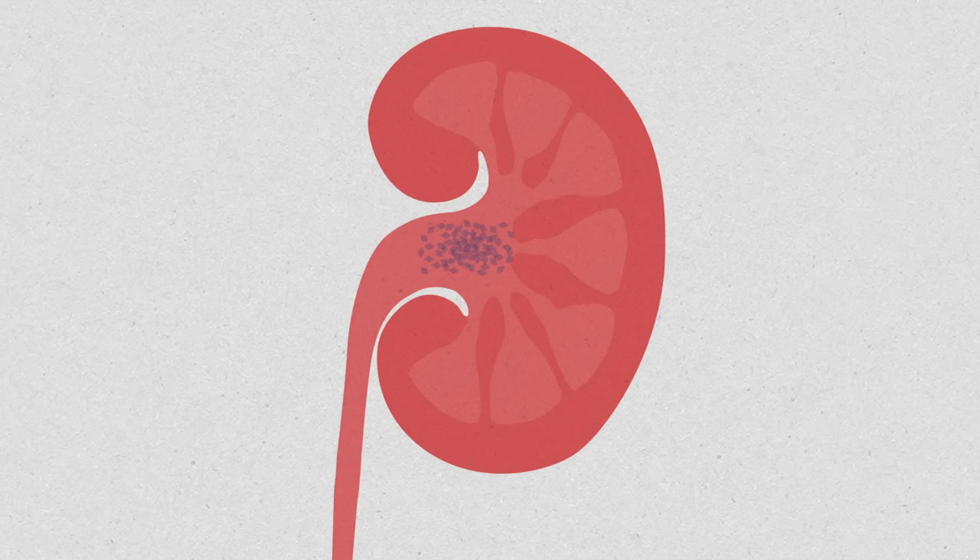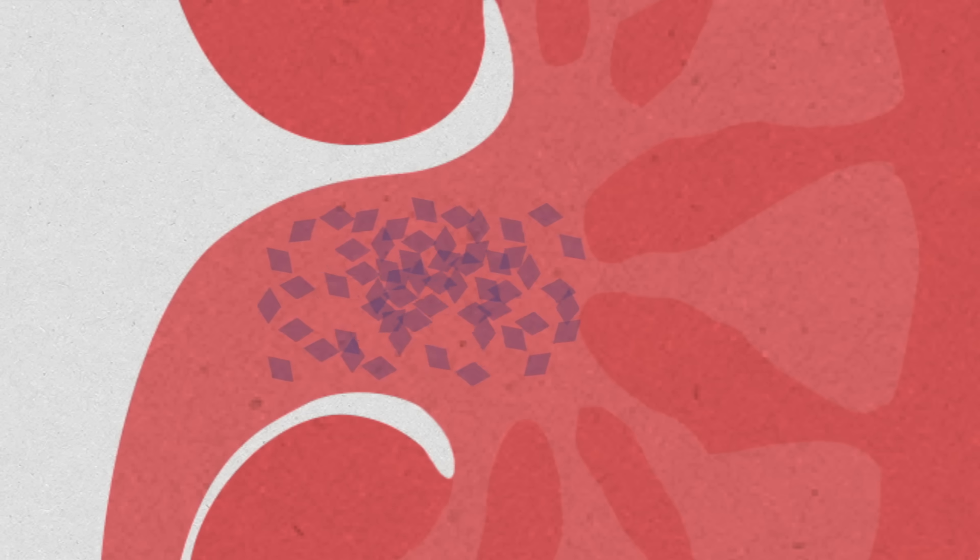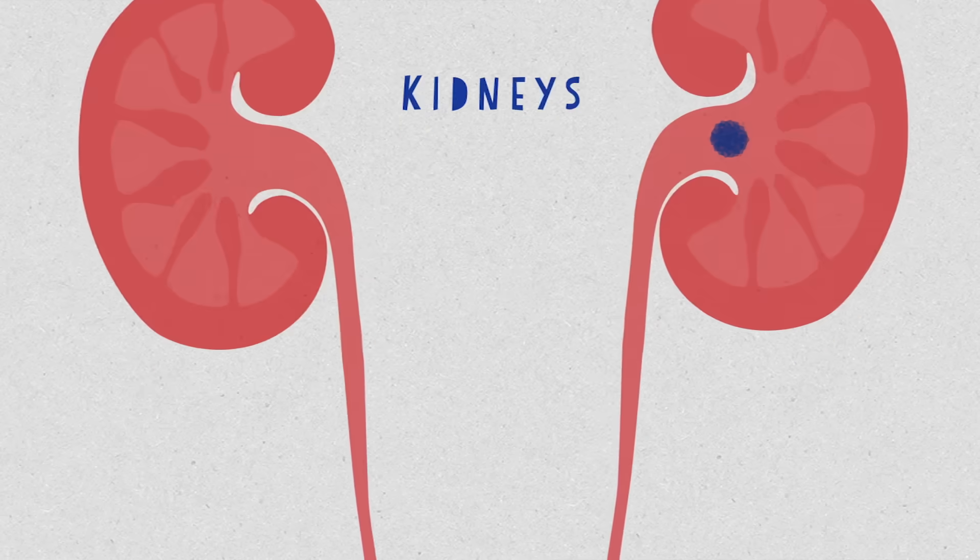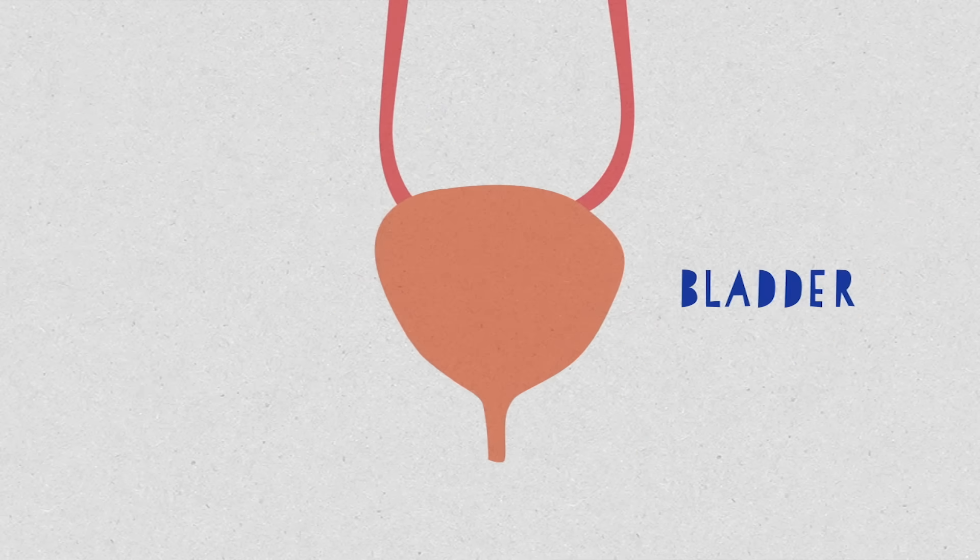Kidney stones form inside the body, but unfortunately, they're extremely painful to get out. A kidney stone is a hard mass of crystals that can form in the kidneys, ureters, bladder, or urethra.